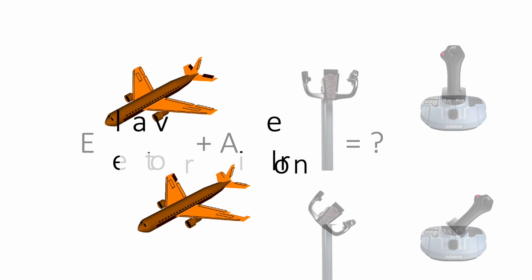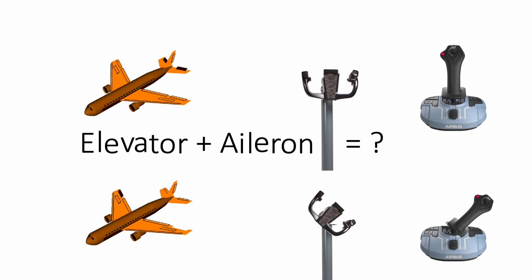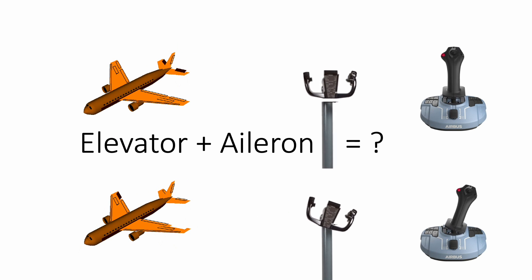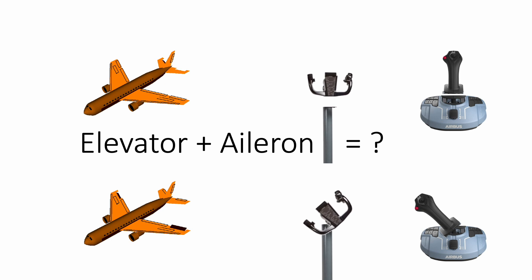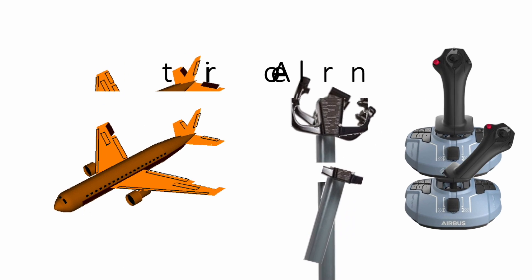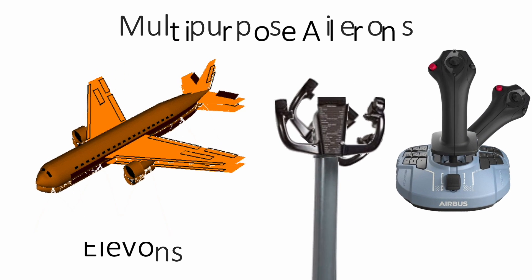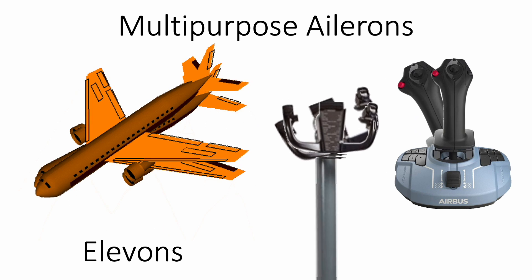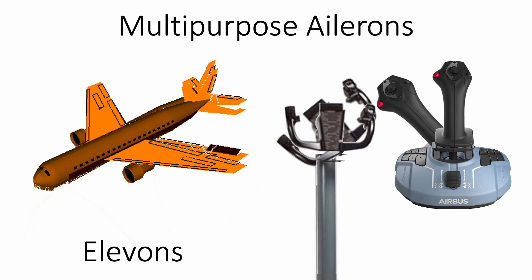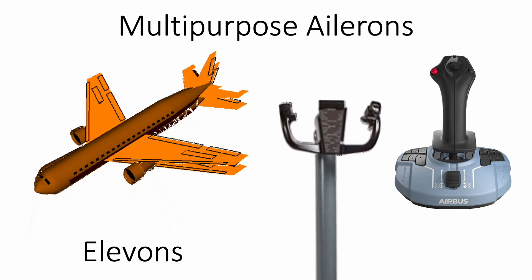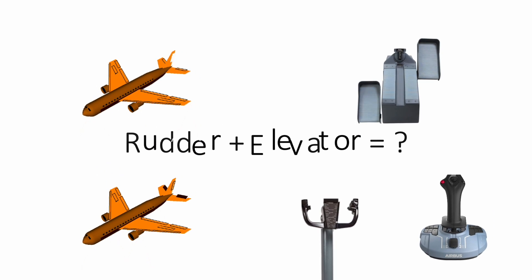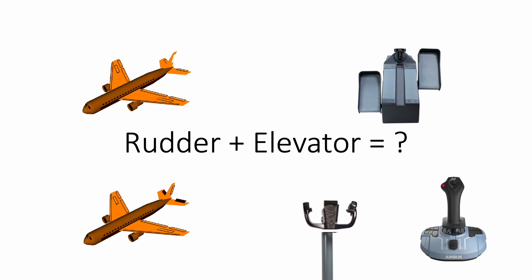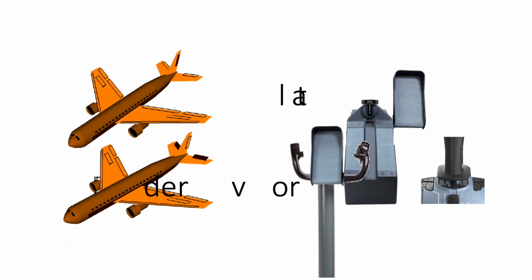In another video upload, we have also revealed that an elevon combines the functions of an elevator and an aileron. This has been the tail setup for a supersonic airplane called Concorde. But what happens when you combine the rudder with the elevator? Let's find out.